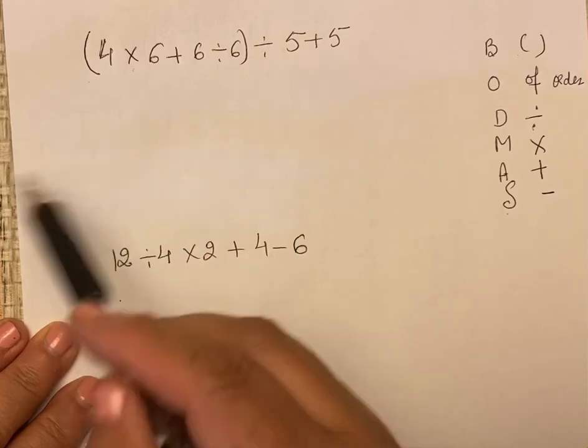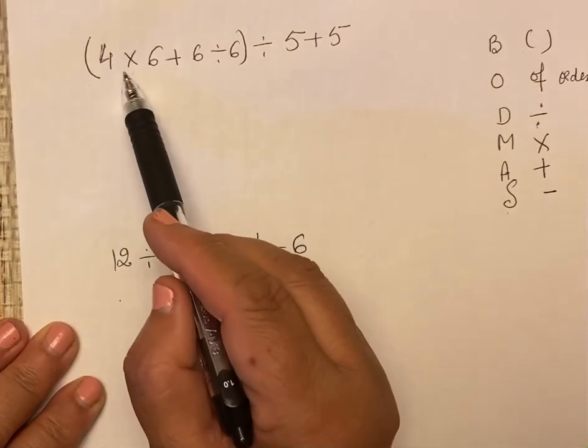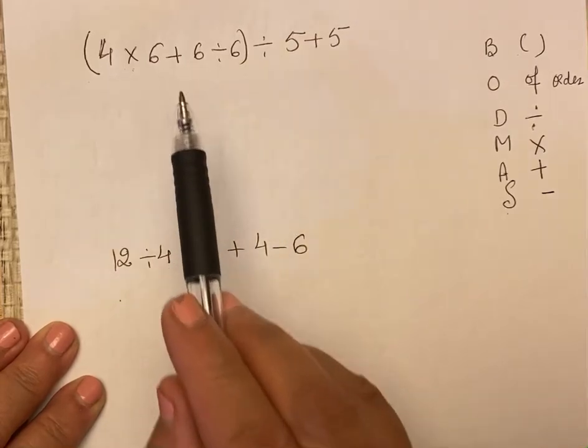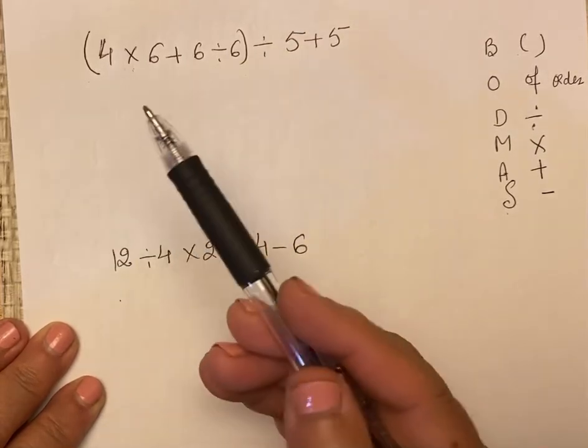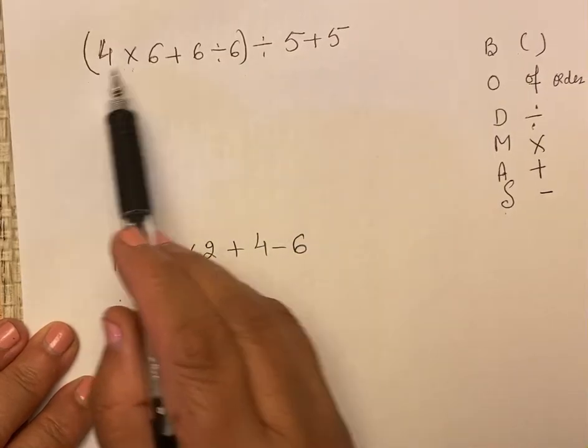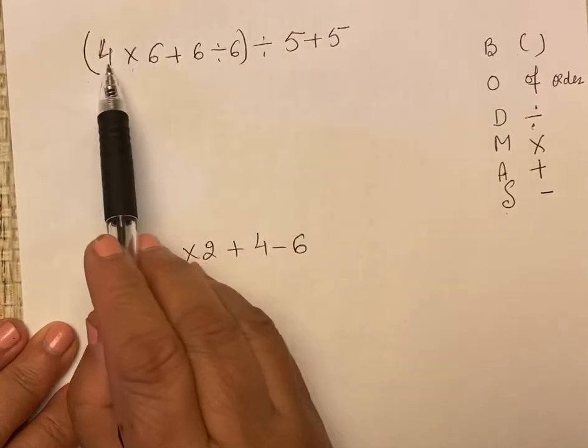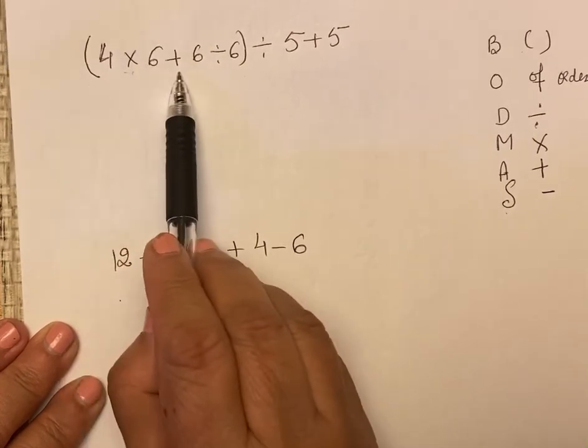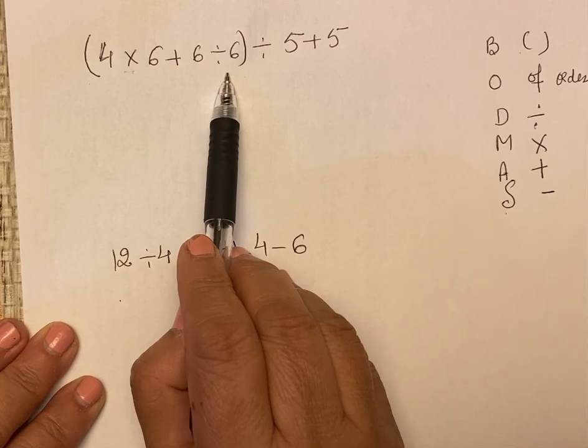When there are so many signs in bracket, then we have to see which sign comes first, that is which sign has the most priority. We have to solve the bracket first, but we have to also see multiplication, addition, and division. Which comes first?